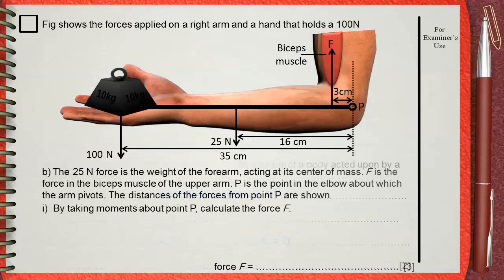Question B: The 25 newtons force in the figure is the weight of the forearm acting at its center of mass. F is the force in the biceps muscle of the upper arm. P is the point in the elbow about which the arm pivots. The distances of the forces from point P are shown. By taking moments about point P, calculate the force F.